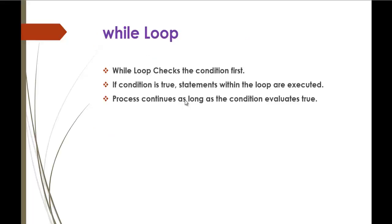This is the while loop slide. The while loop checks the condition first. It means that you have to give the condition for the while loop first — the first and foremost work it is going to do is check the condition which is passed. If that condition is true, it will execute the statements within that loop. This process continues as long as the condition evaluates true. Once it is false, it will come out of the loop.